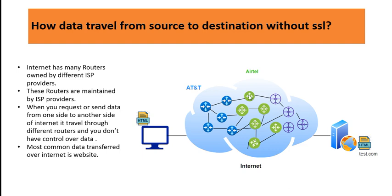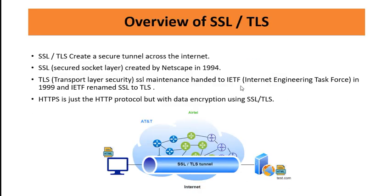This is not a secured way because someone sitting at AT&T, Airtel, or another ISP provider can see your data. For example, if you're on Facebook and texting a friend, the data transfers through multiple ISP providers and a third person can see what you are requesting or sending. To overcome these issues, we generally use SSL and TLS protocols.